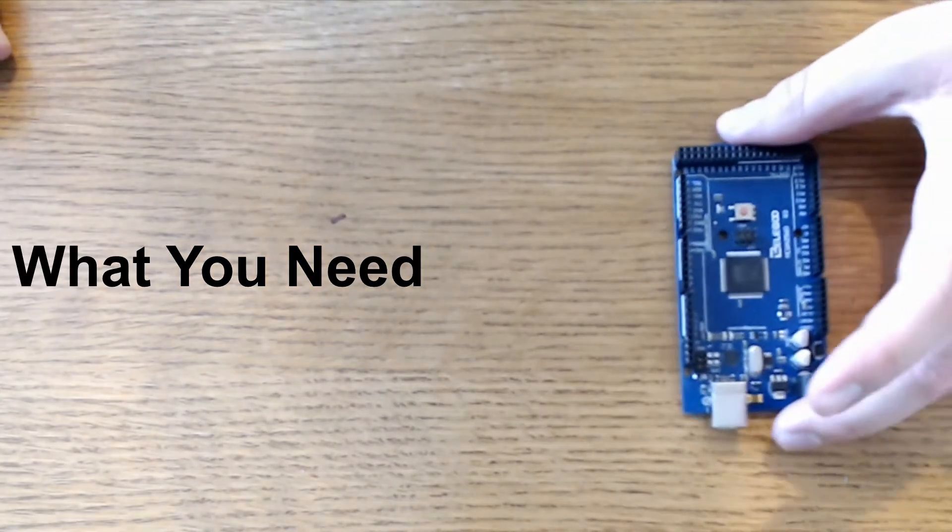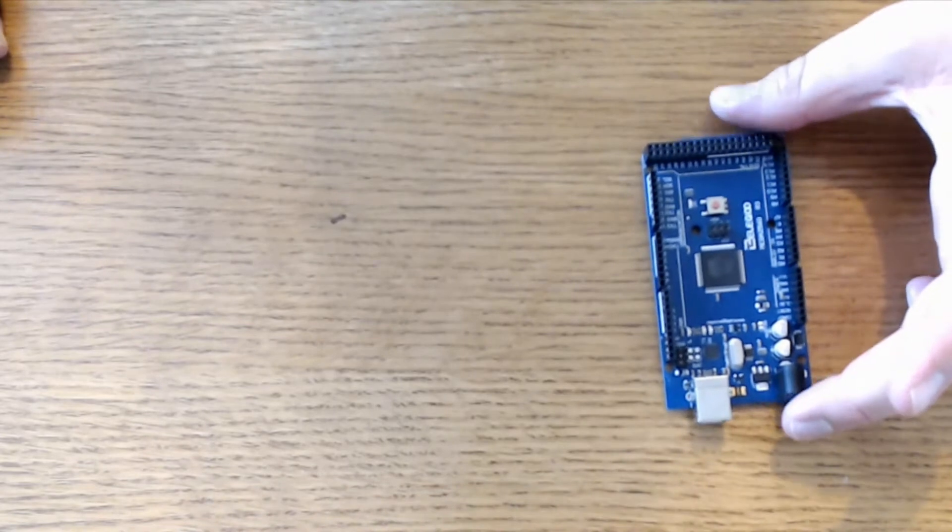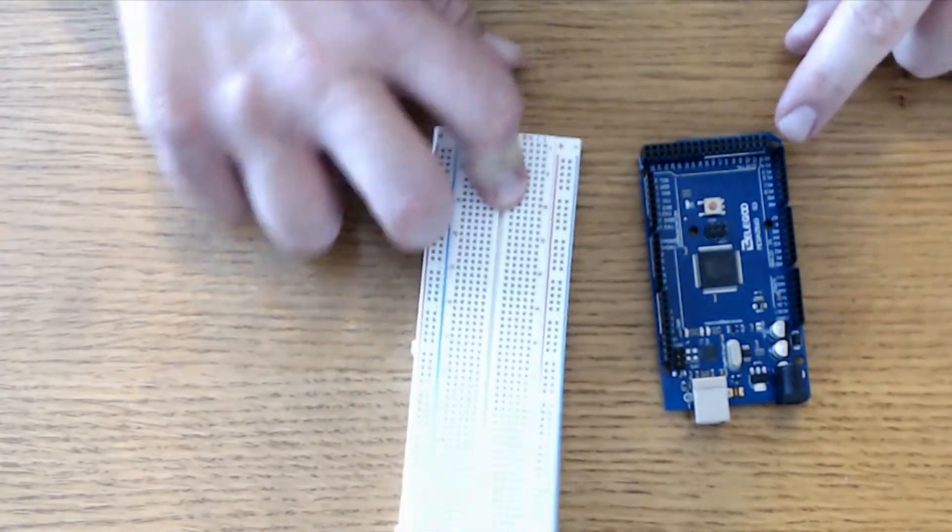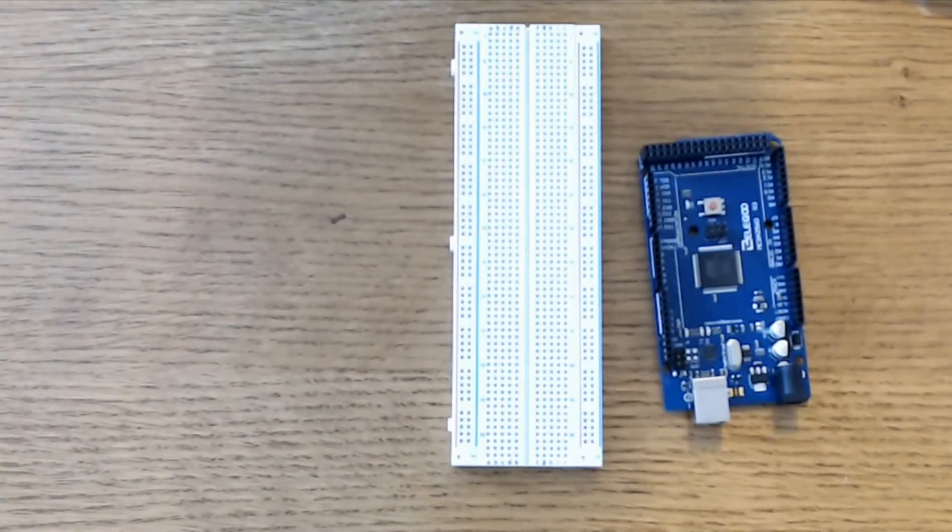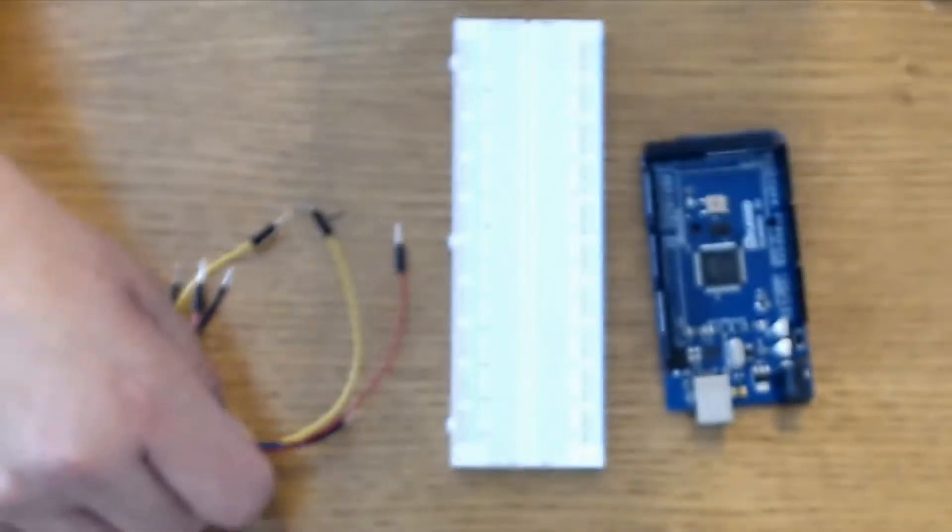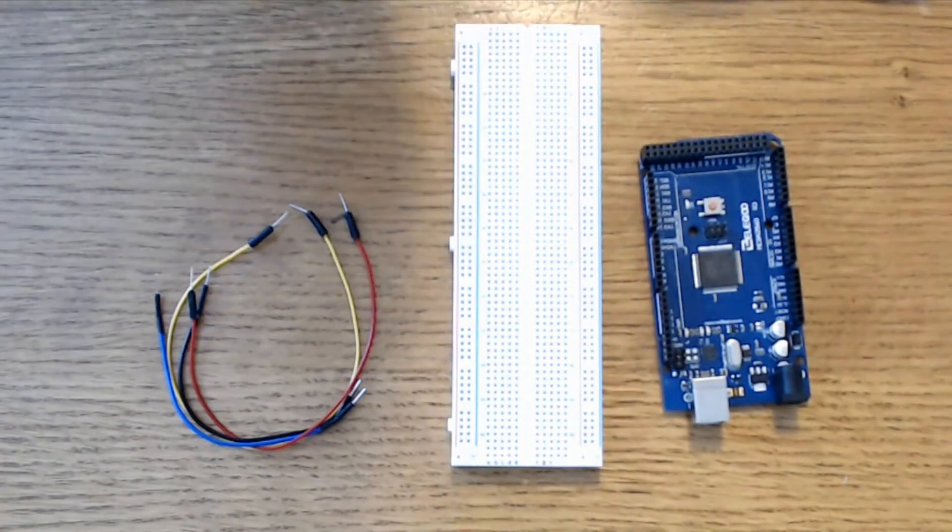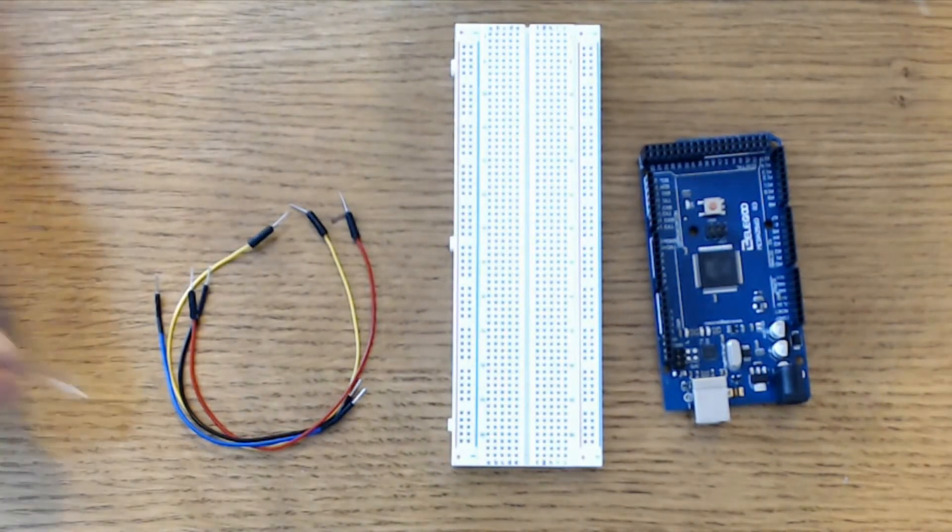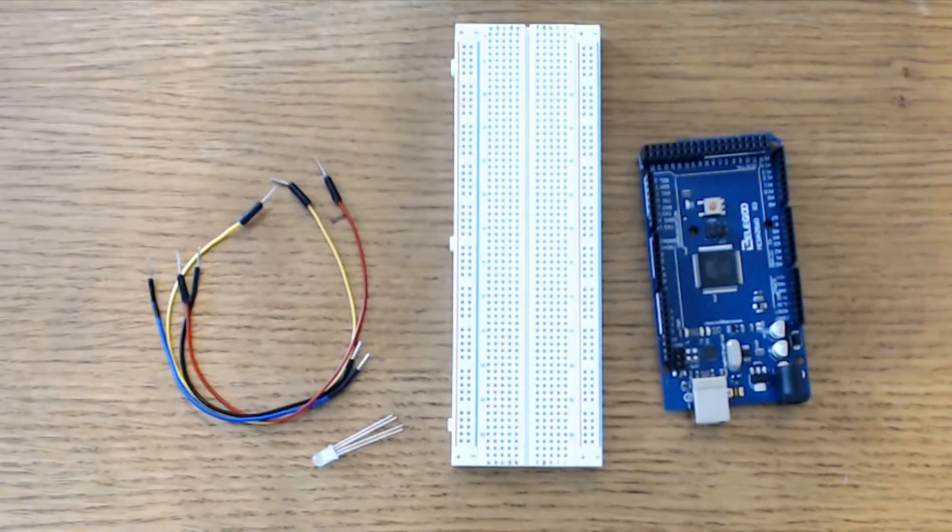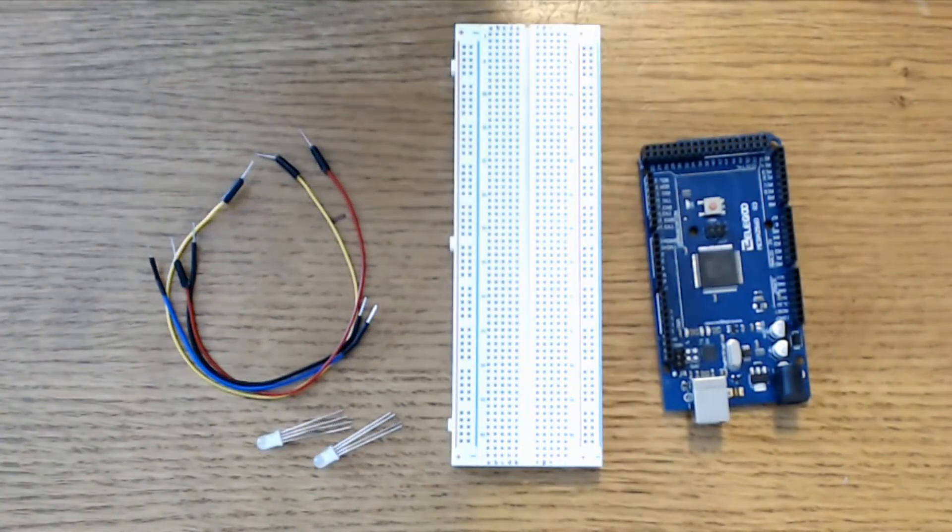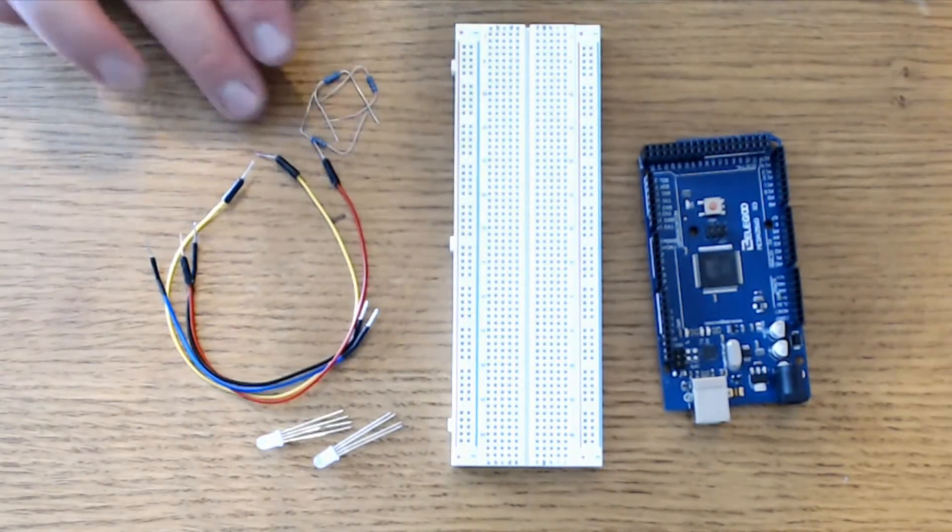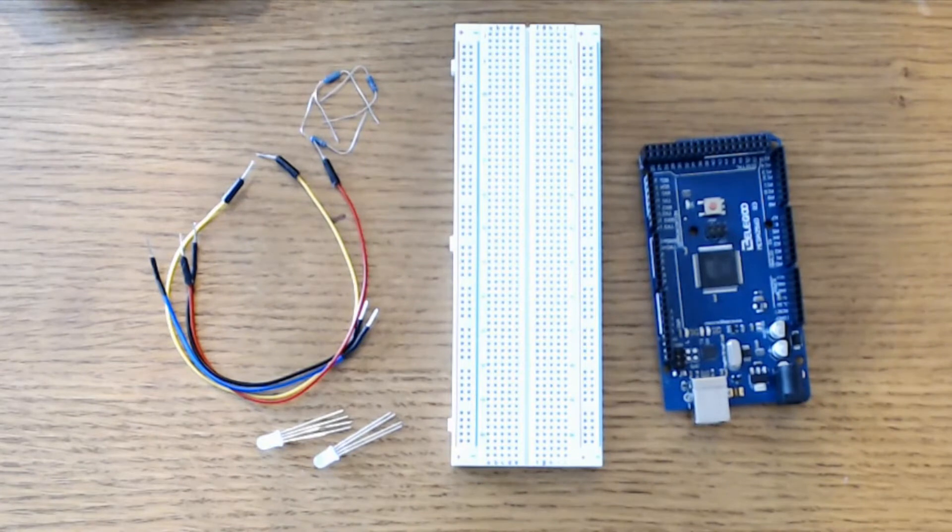For lesson 4 you will need the Elegoo Mega 2560 board, the most obvious item. You'll also need a breadboard. I'm using the one that came in the kit. It's an 830 point breadboard. Any breadboard will do. You'll also need four male-to-male wires. How else are you going to get current to your breadboard? You'll also need at least one RGB LED. I'm using two. Two is better than one. No, I just have them, so I'm using them. And you'll need three 220 ohm, 220 ohm resistors. That's all you need. Pretty simple. Let's get this going.